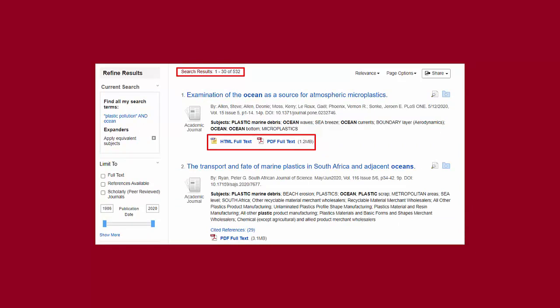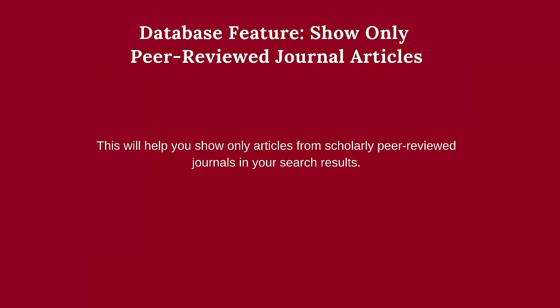Journal articles that you can immediately download have either an HTML or PDF full-text option, or both. There are other database filters to think about as you construct your searches. One you should be aware of is the ability to limit your search results to show only those articles from scholarly peer-reviewed journals, which your instructors will require you to use in your research projects.